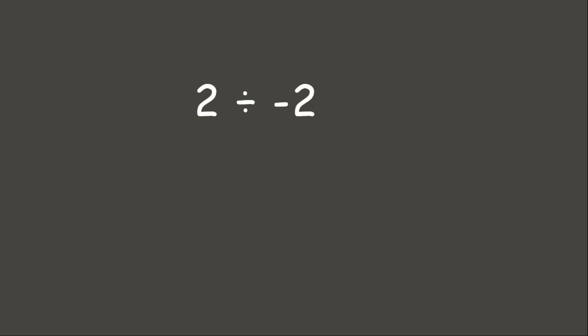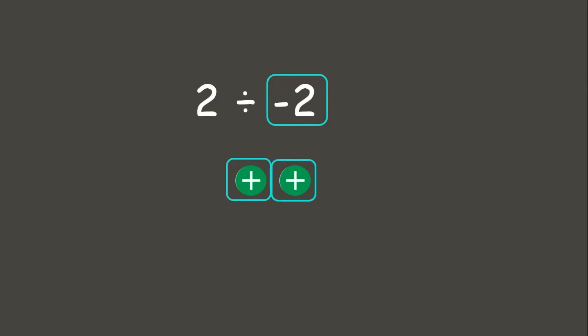Now let's try dividing integers with different signs. Let us try positive 2 divided by negative 2. Using our counters, our dividend is positive 2, so we put 2 positives and divide into two equal groups. Since our divisor is a negative integer, we flip our counters and get the opposite. There is one negative in each group, therefore our answer is negative 1. Positive 2 divided by negative 2 is negative 1.